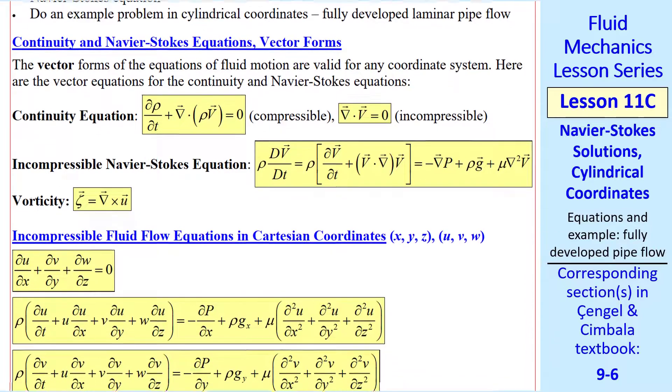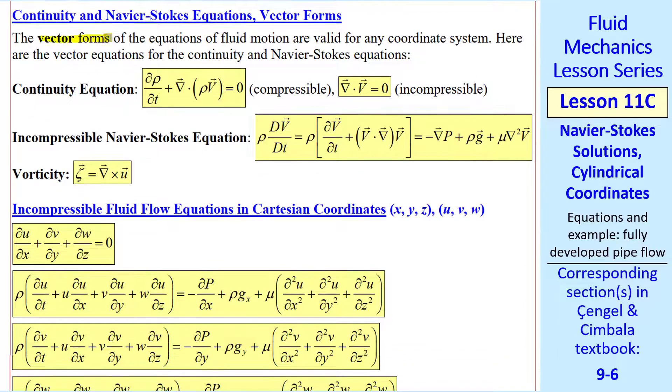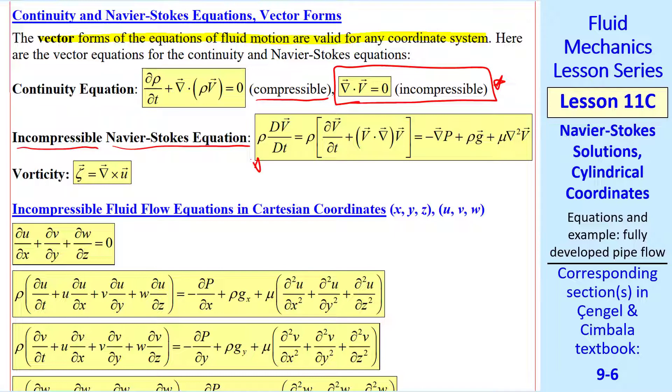Let's look at continuity and Navier-Stokes in vector form. The vector forms are valid for any coordinate system. Here I show the compressible form of the continuity equation, but we're going to talk about incompressible flow.